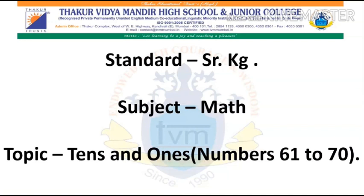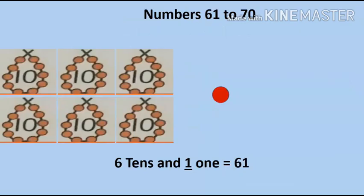Standards: Senior KG. Subject: Maths. Topic: Tens and Ones — Numbers 61 to 70. Let us learn about numbers 61 to 70. As you can see in the picture, let's read.